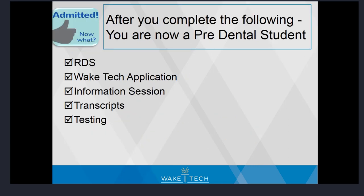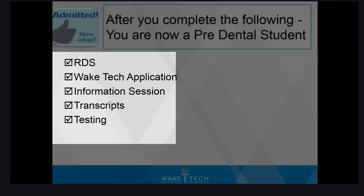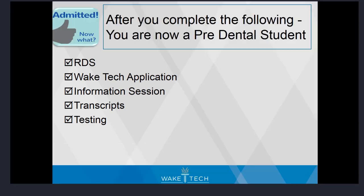After completing the following steps — the residency application, the Wake Tech application, this information session, submitted transcripts, and completed testing if necessary — you are admitted to Wake Tech as a pre-dental hygiene or pre-dental assisting student.